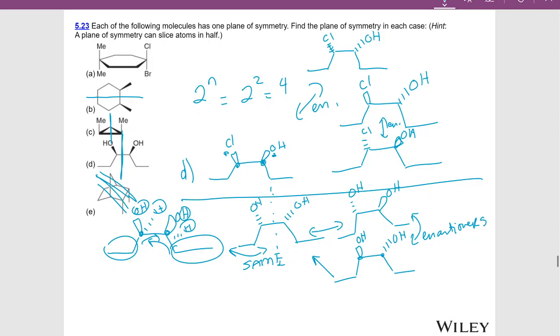So this molecule only has three stereoisomers instead of the full four because it has a meso form.